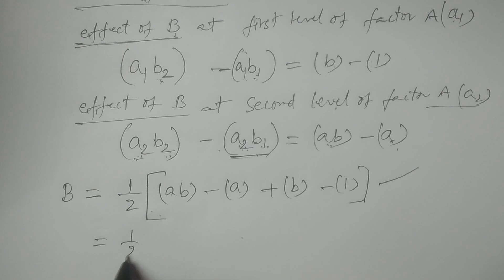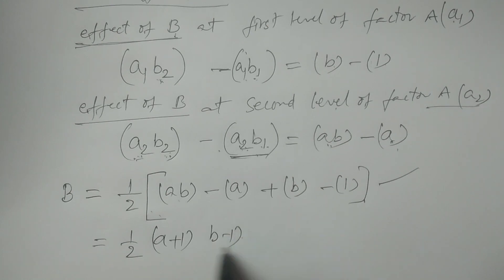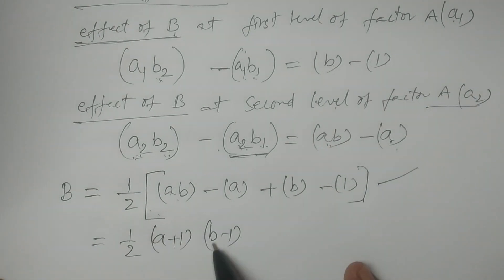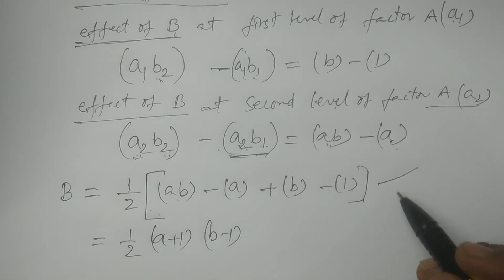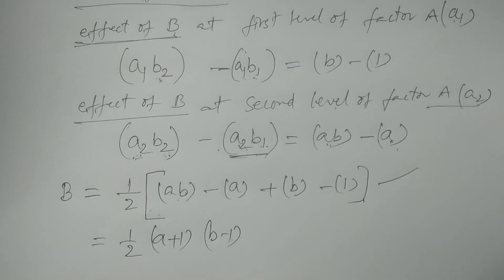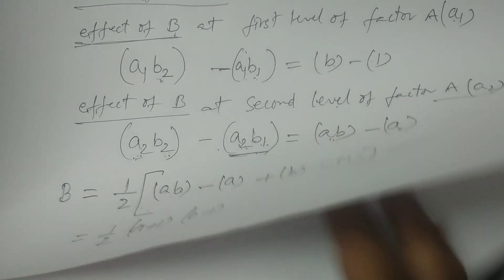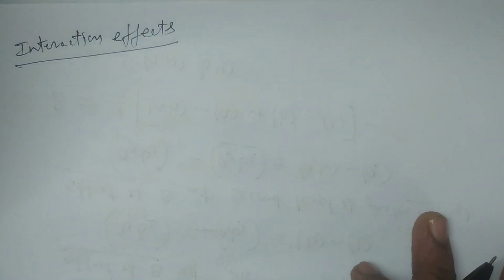The simplified formula for the main effect of B is (A+1)(B−1), which expands to AB − A + B − 1. This gives us the main effect of B.